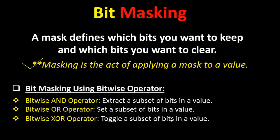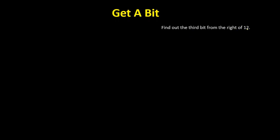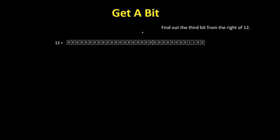A mask is a value and that value we will use to do something in another value using a bitwise operator. Now let's see how we can find a specific bit's value from a binary number. Let's talk about getting a bit. Let's say you were asked to find out the third bit from the right of 12. If we convert the number 12 into binary, then you get this binary equivalent. Here we have 32 bits because an integer takes 32 bits. And here we see the third bit from the right, and we have to find out the value of this bit.